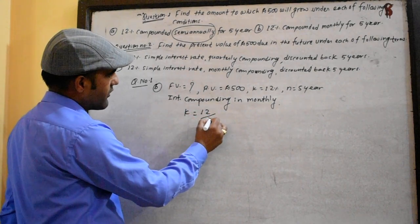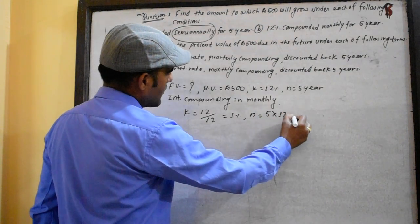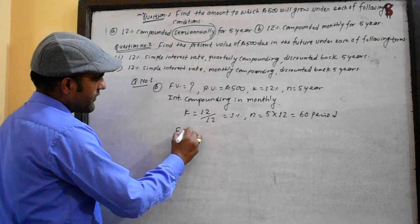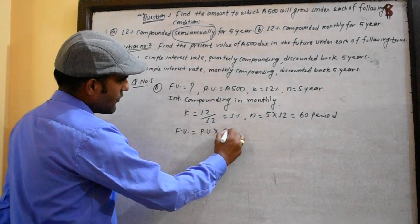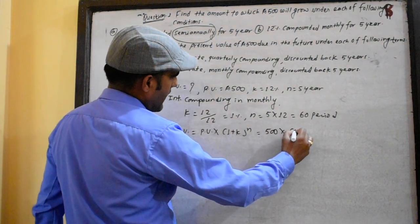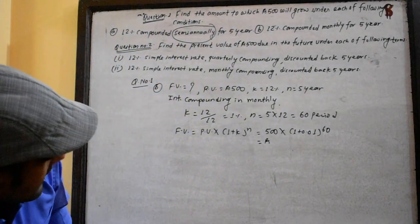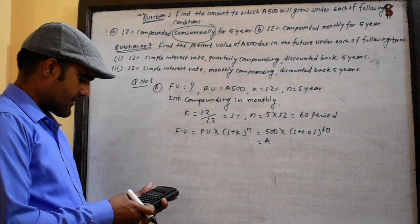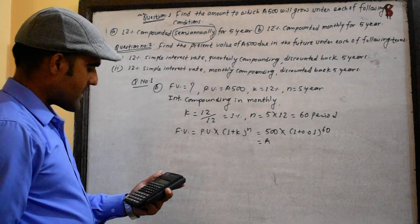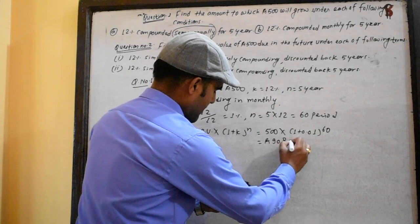12 divided by 12 is 1% per period. n equals 5 times 12, which is 60. The future value is FV equals PV times (1 plus k) to the power n: 500 times (1.01) to the power 60, giving 908.348.